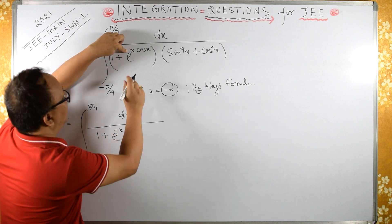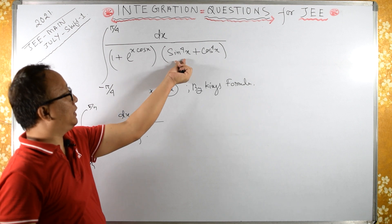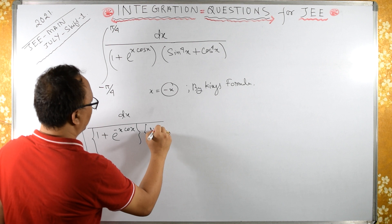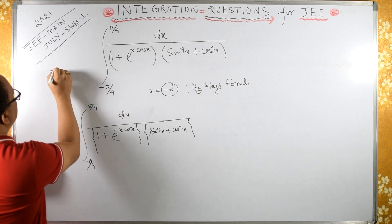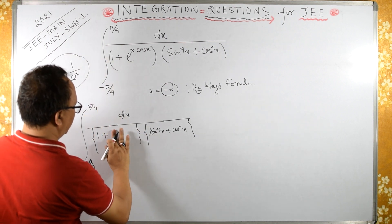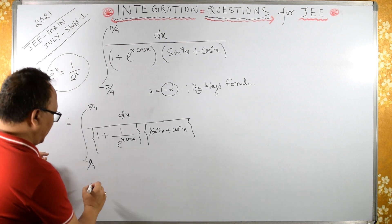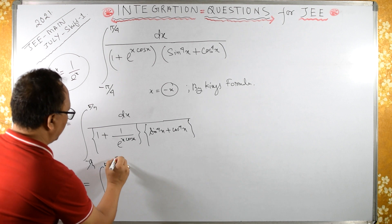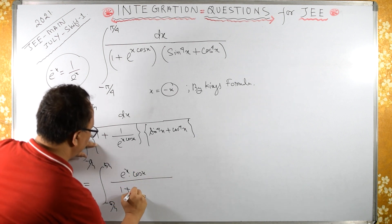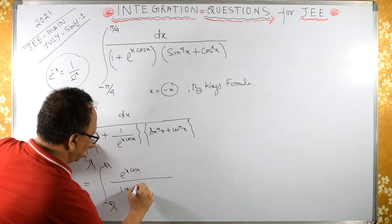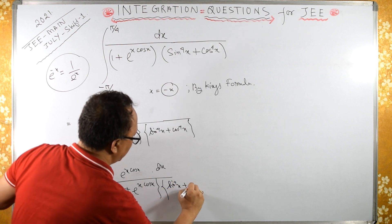Here, cos(−x) = cos(x), so it does not change anything. This is even power, so it does not affect anything. We will have sin⁴x plus cos⁴x in the denominator. Now, e^(−x) is the same as 1/e^x, so I can write 1 upon e^x into cos x. Taking LCM from minus π/4 to π/4, we get e^x·cos x and 1 plus e^x·cos x in the denominator, with sin⁴x plus cos⁴x in the numerator.